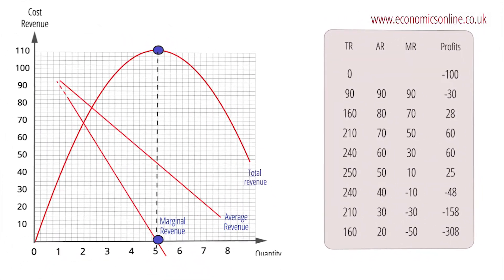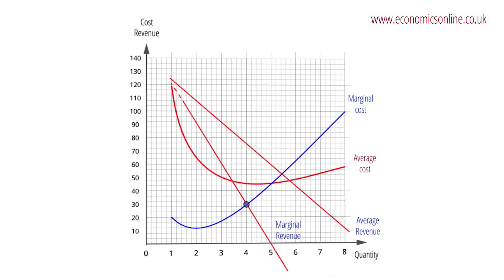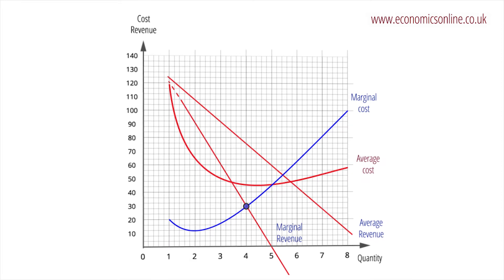Profits are maximised at the output where marginal revenue equals marginal cost. At this point, marginal profits will have reached zero.